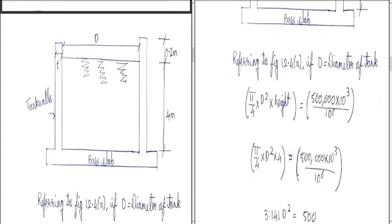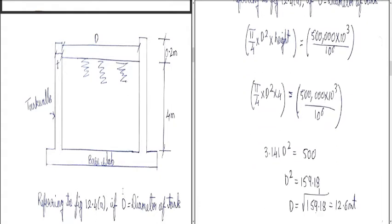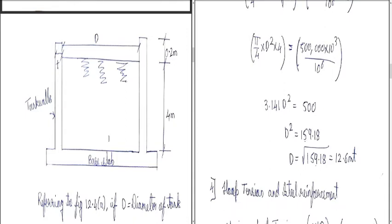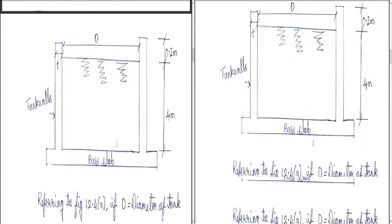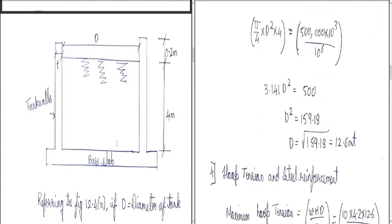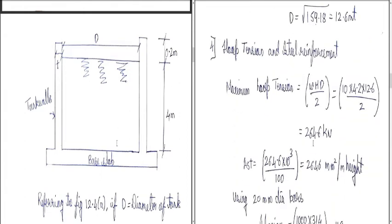Solving: 3.141 × D² = 500, so D² = 159.18, and D = √159.18 = 12.6 meters. We therefore adopt a diameter D = 12.6 meters.